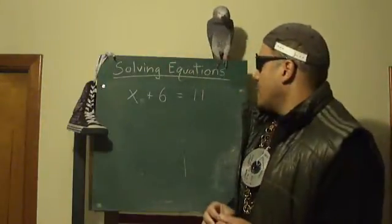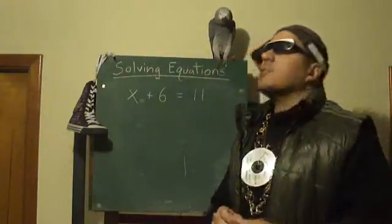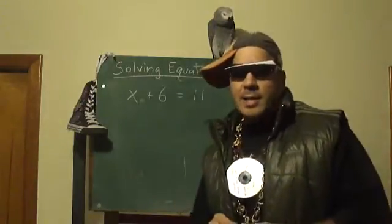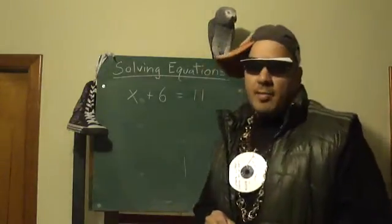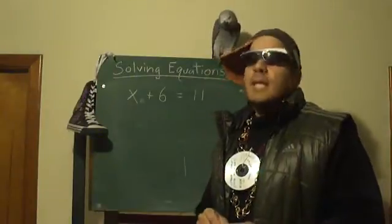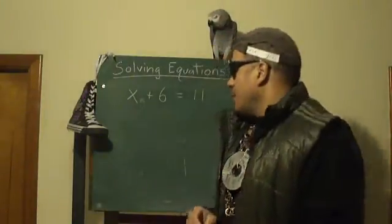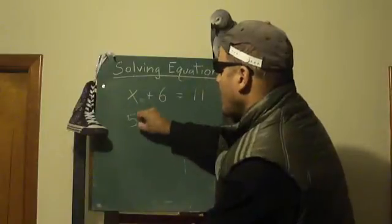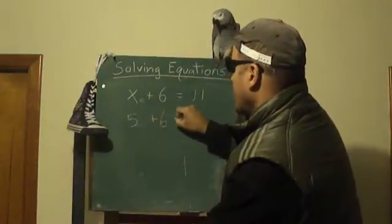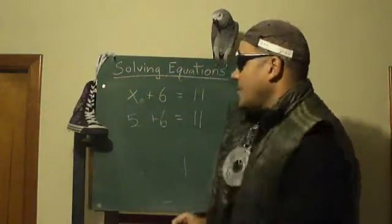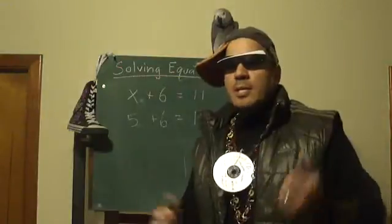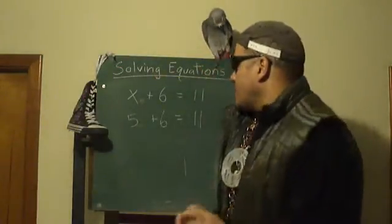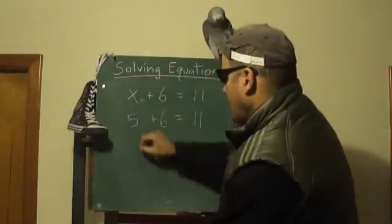I think I can answer that. Is it 3? 3 plus 6? No, that's 9. How about 5? 5 plus 6? Yeah, that's 11. So we can say the answer is 5 — 5 plus 6 equals 11. So we actually solved that equation using mental math. We can say x equals 5.